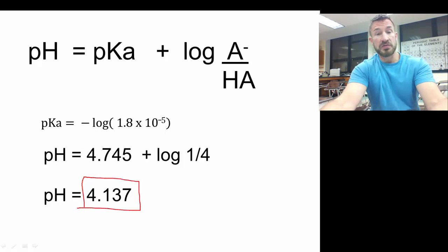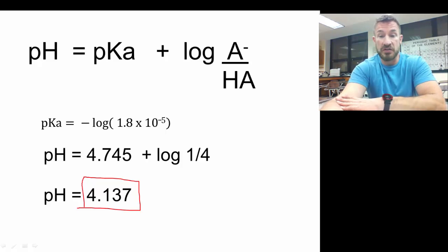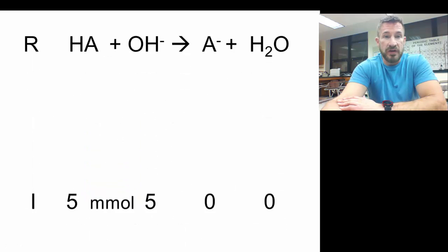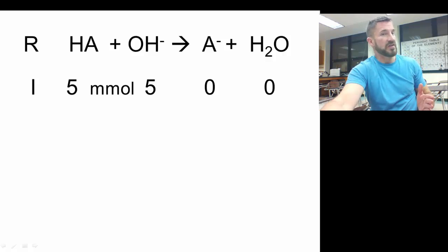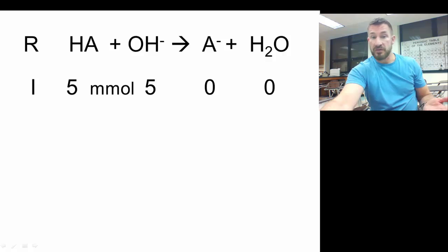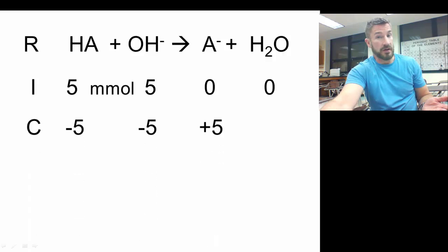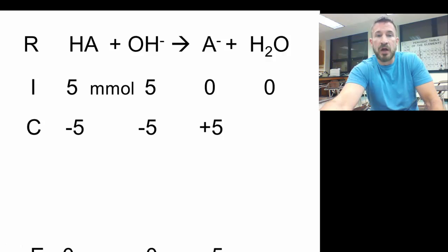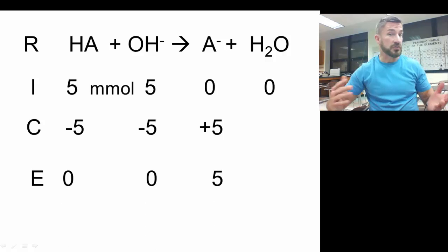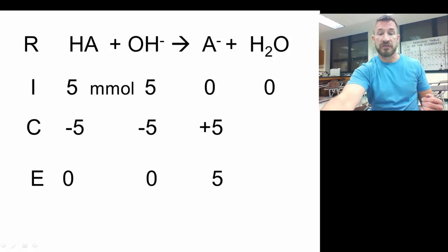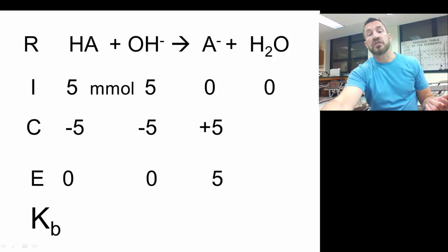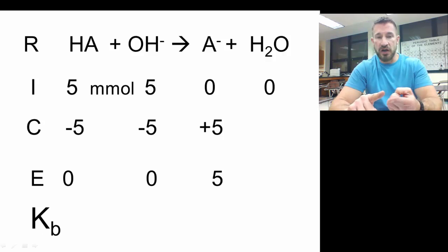There are two more examples that go with this problem — you can go ahead and work those out as well. Now let's look at the equivalence point. At the equivalence point, we've had exactly the same number of moles of base as acid: 5 millimoles and 5 millimoles. At the end, the weak acid and strong base go to zero, and A⁻ goes up by 5 to give 5 millimoles.